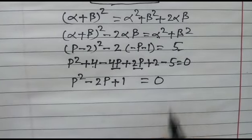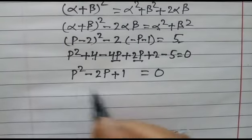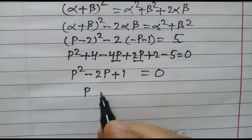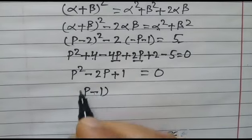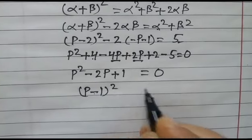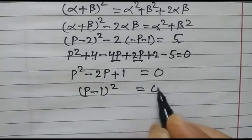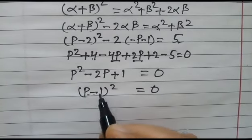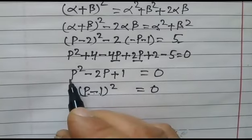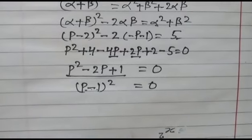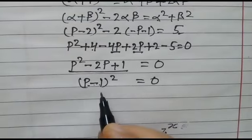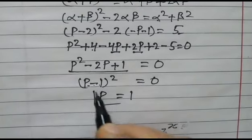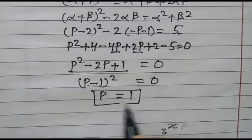So p - 1 = 0, which means (p-1)² = 0. If we expand (p-1)², we get this. Therefore, p = 1.